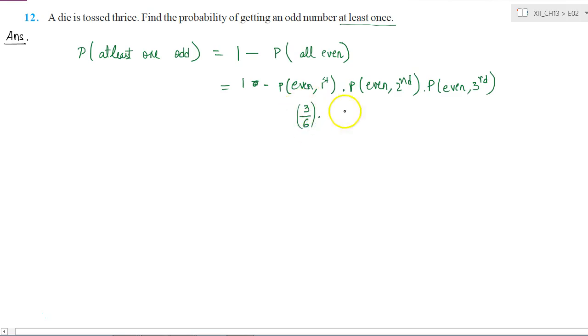This is the same in all three throws. So it is 3 by 6 into 3 by 6 into 3 by 6. This is probability of getting even in all throws. Therefore, probability of getting at least 1 is 1 minus this, which is equal to 1 minus 3 by 6 simplified as half, half cube, which is 1 minus 1 by 8, which is equal to 7 by 8. This is our answer.